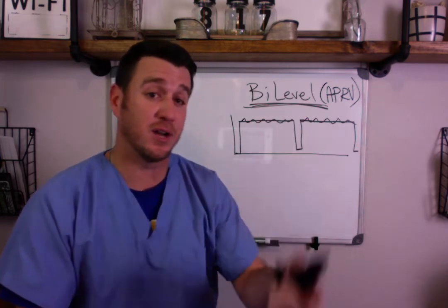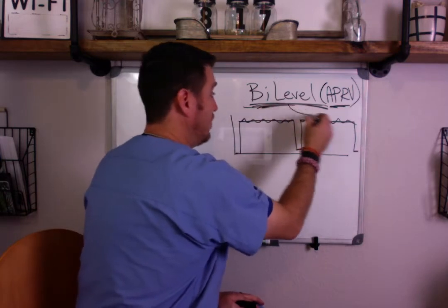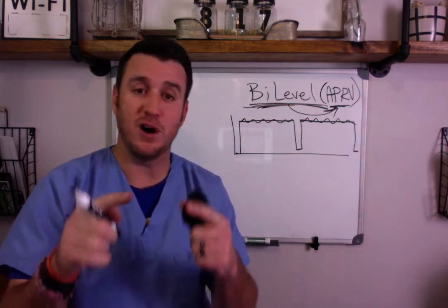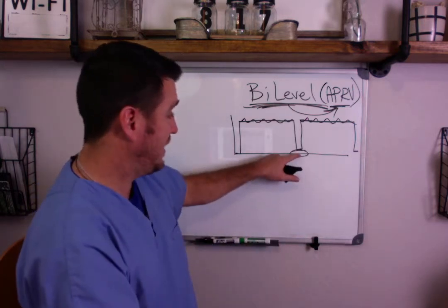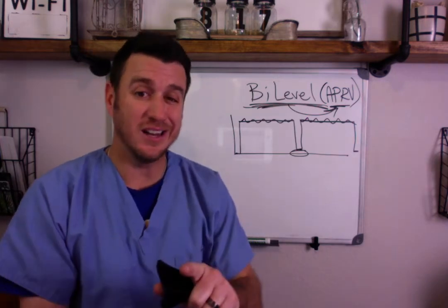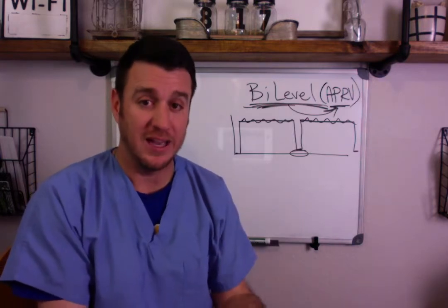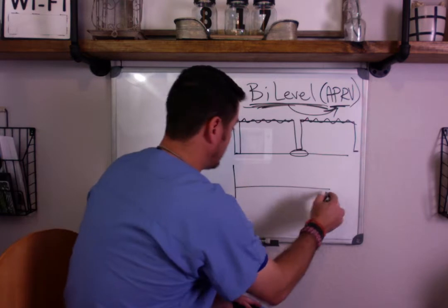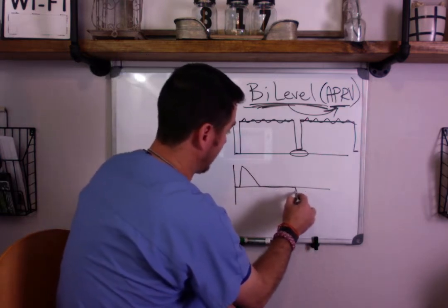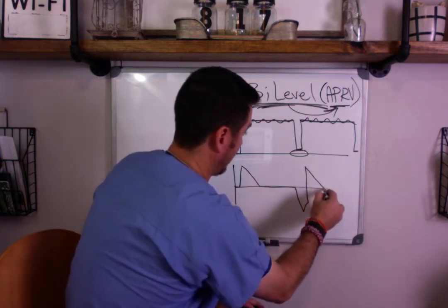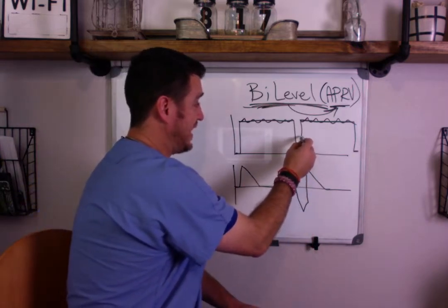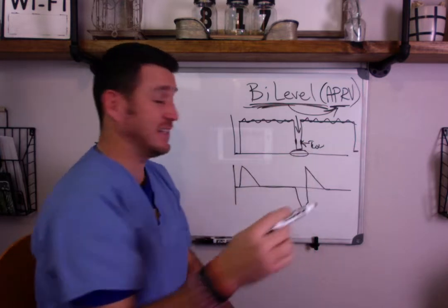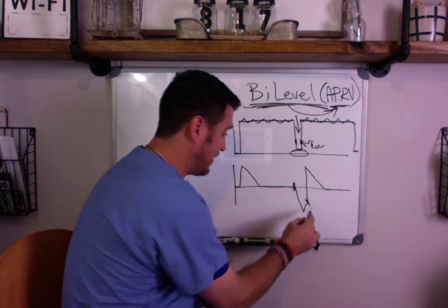Do we set PEEP in APRV or in Bi-Level used like APRV? The answer is no — you don't set a PEEP. That doesn't mean you fall to zero. Looking at the flow graphic, you stop short of zero because you're intentionally air trapping. The time low is this short gap on the waveform. On the flow graphic, from peak expiratory flow decay to when the next breath starts — that interval is your time low.